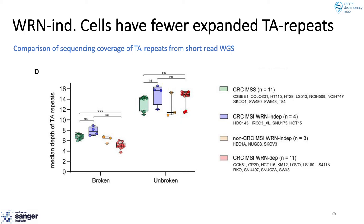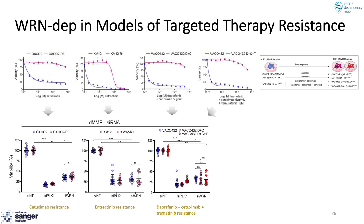Our results suggest that Werner synthetic lethality is observed across a heterogeneous collection of mismatch repair-deficient colorectal cancers, strongly supporting MSI as a biomarker. However, there exists a rare subset of mismatch repair-deficient colorectal cancers which are not dependent upon Werner, characterized by an absence of MLH1 and MSH2 alteration and an absence of expanded TA repeats. Collectively, this suggests the majority of mismatch repair-deficient patients would respond to a Werner-targeted medicine, but there exists a small molecularly defined subset that would presumably be refractory. Patients with treatment-refractory mismatch repair-deficient colorectal cancer represent an unmet clinical need and would benefit from any future Werner-targeted medicines.